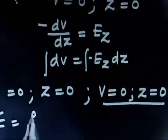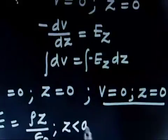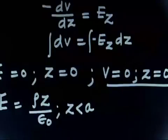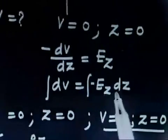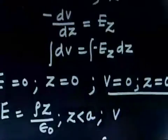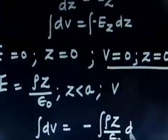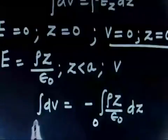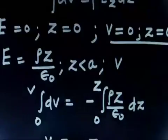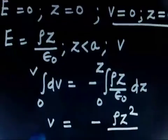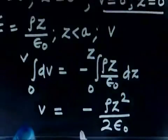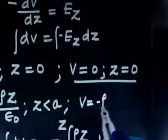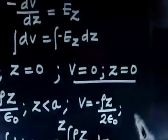For the second region z < A, E = rho z / epsilon-naught. Integrating: dV = minus (rho z / epsilon-naught) dz. Integrating from 0 to z with V(0) = 0, the potential is V = minus rho z-squared divided by 2 epsilon-naught for z less than A. This is a parabolic (quadratic) variation in z.